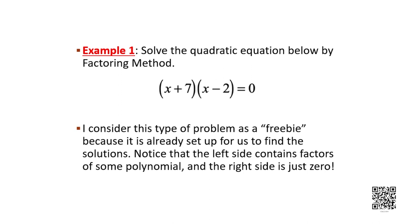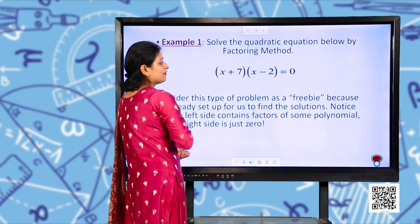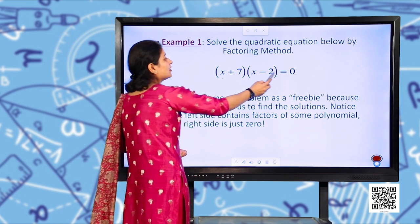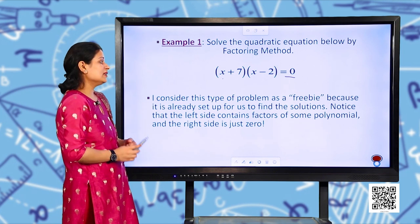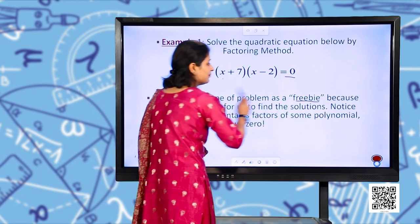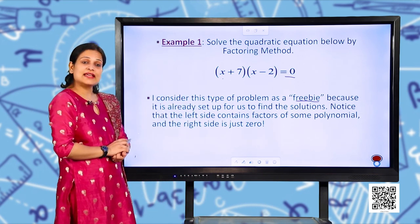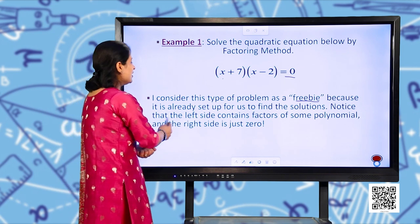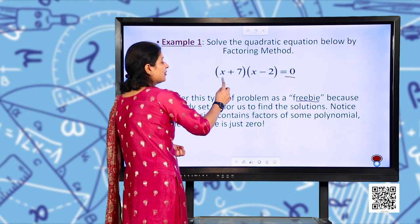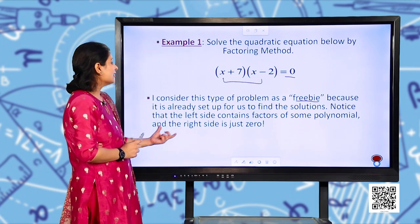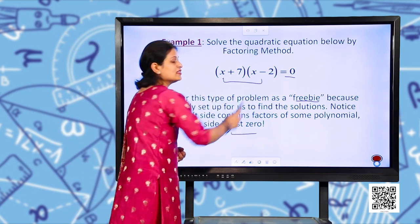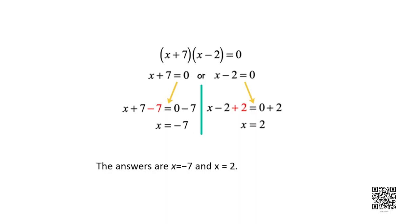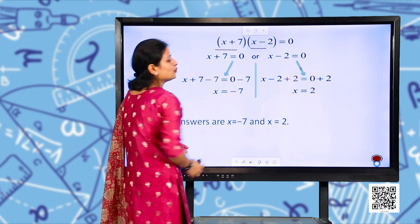Let us try some examples. Example 1: solve the quadratic equation below by the factoring method. We have two factors, (x + 7) and (x − 2), whose product equals zero. I consider this type of problem a freebie because it is already set up for us to find the solutions easily. Notice that the left side contains the factors of some polynomial and the right-hand side is just zero.